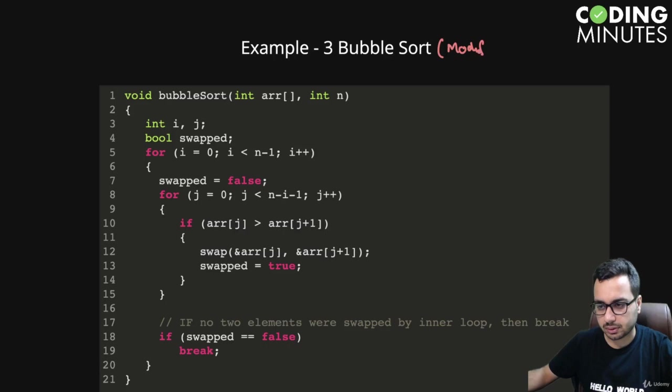In this algorithm, we are taking a boolean variable called swapped. In the first iteration, let's say the array is 1, 2, 3, 4, 5.